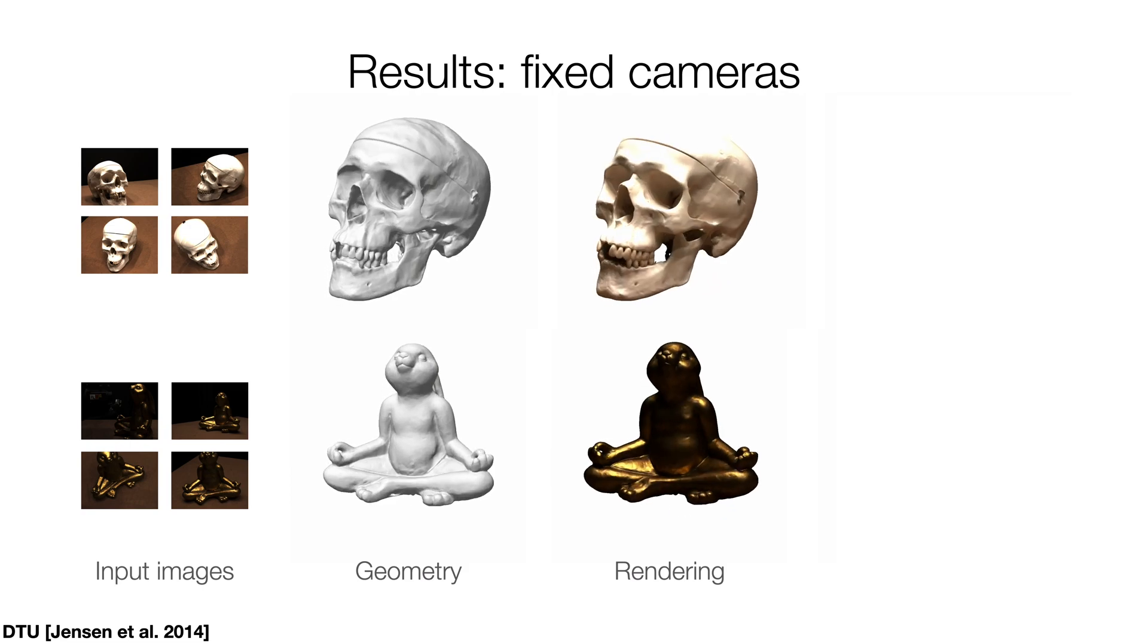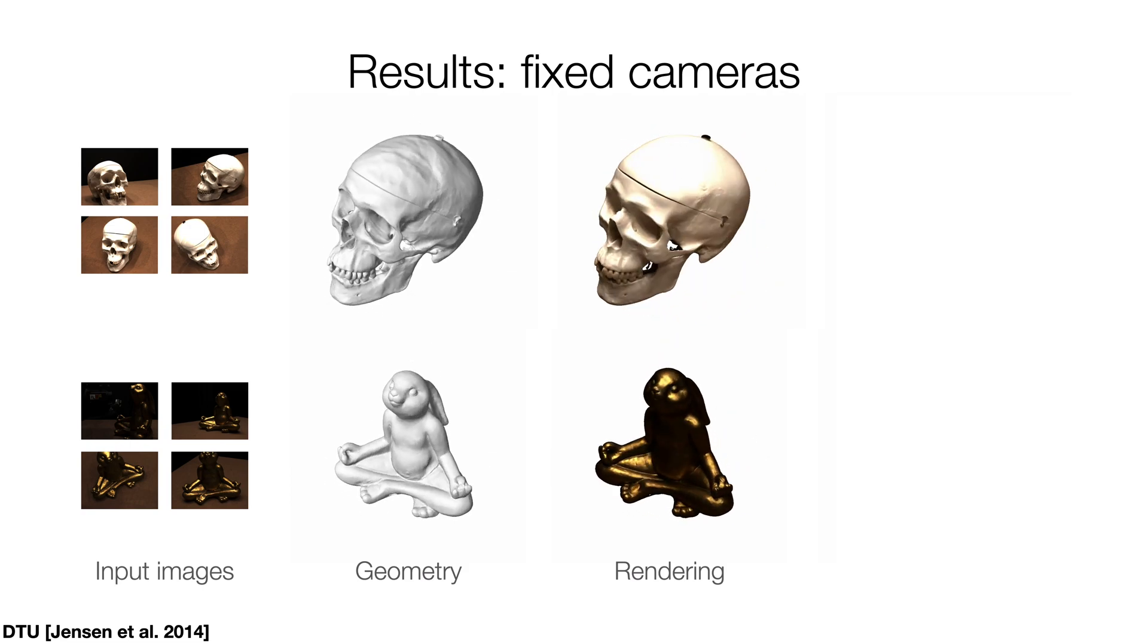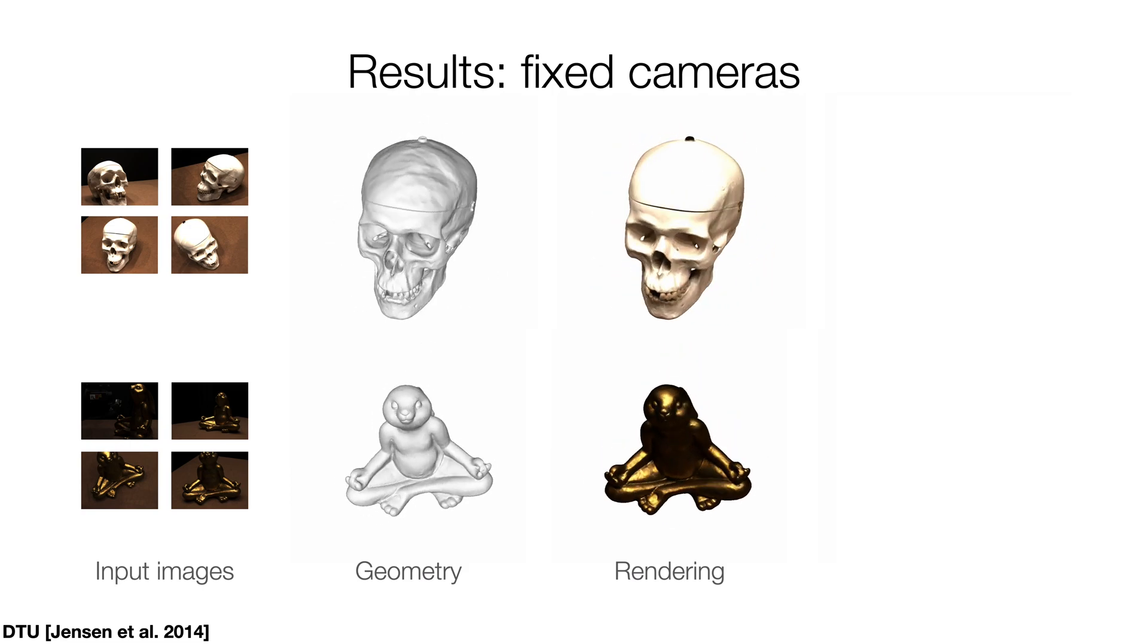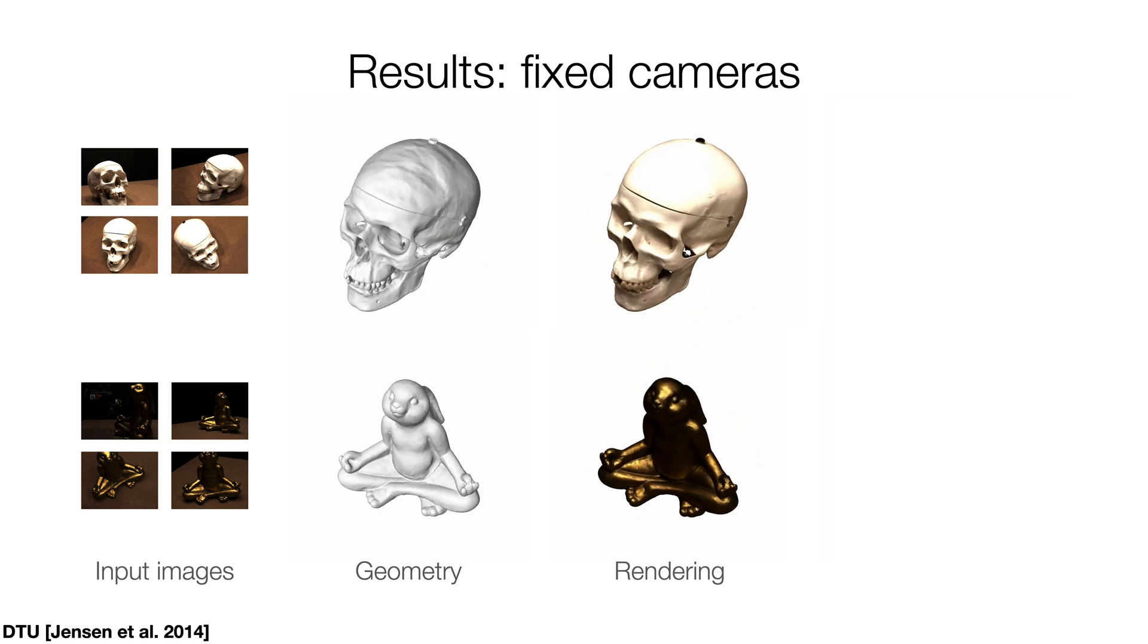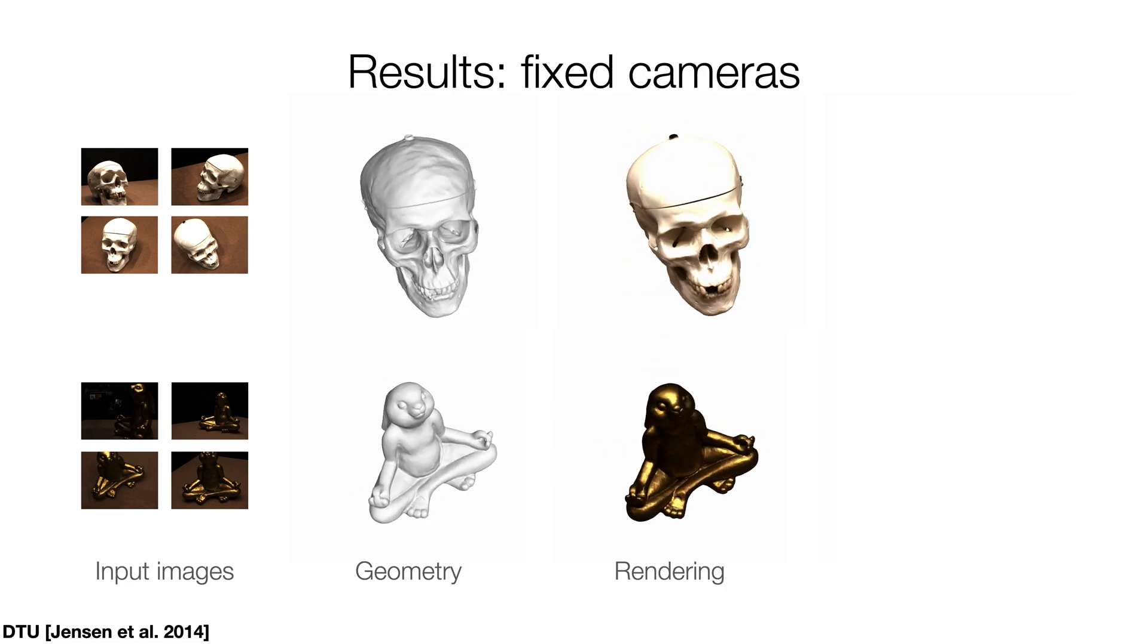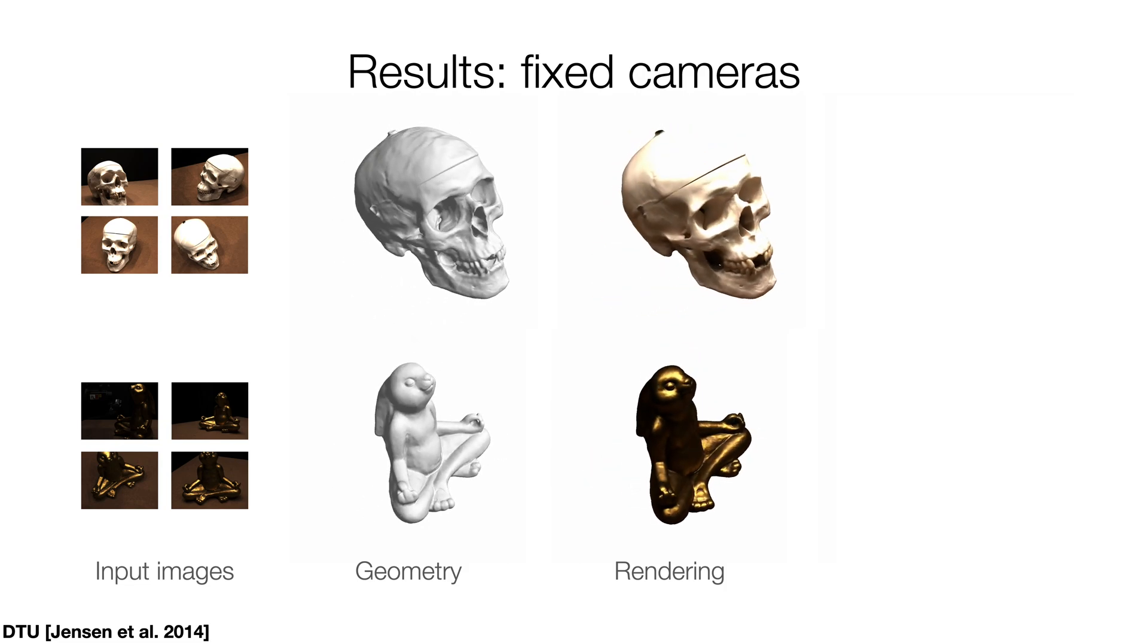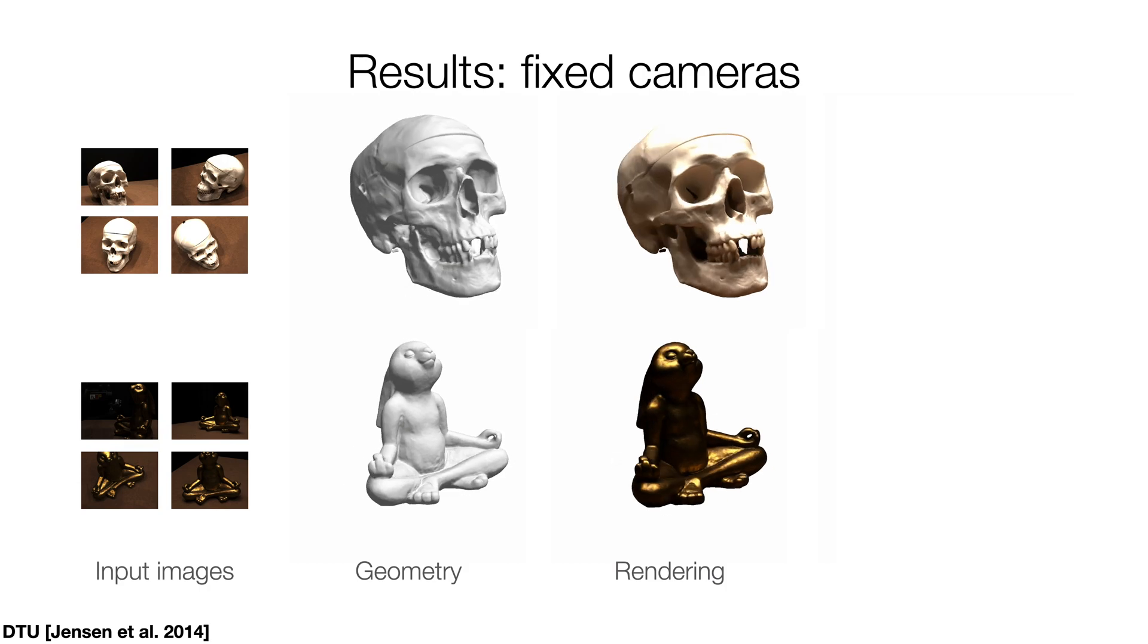We apply our multi-view surface reconstruction model to real 2D images from the DTU dataset. Here we show the reconstructed geometry, i.e. the zero-level set of the implicit function F, and rendering of novel views gained from the neural renderer M, when using fixed ground-truth cameras.